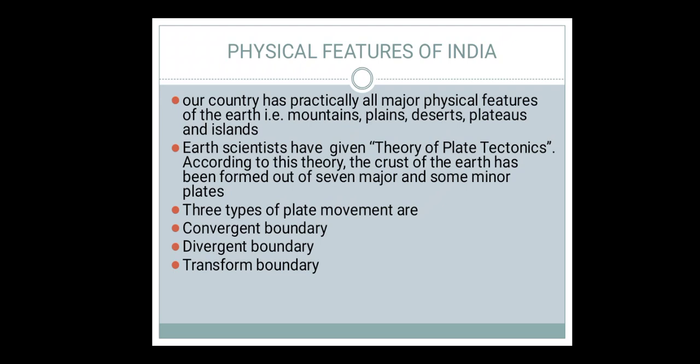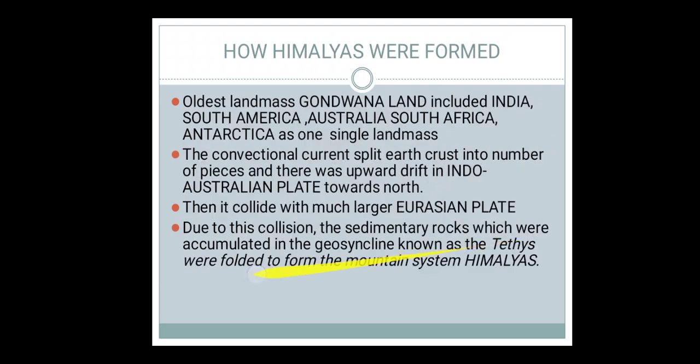The theory of plate tectonics means the crust of the earth has been formed out of seven major and some minor plates. There is movement in these plates, and three types of movement are found: convergent boundary, divergent boundary, and transform boundary.